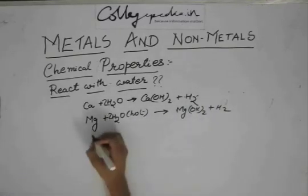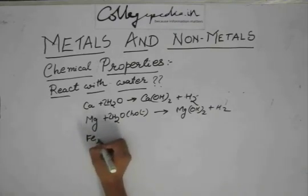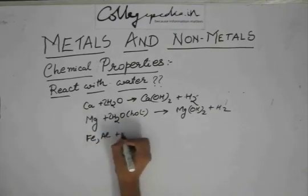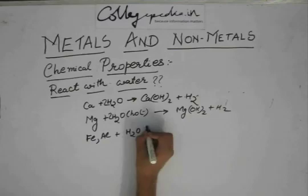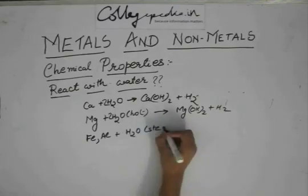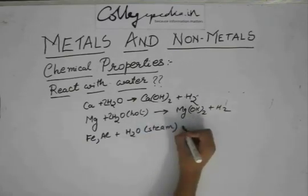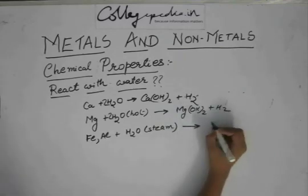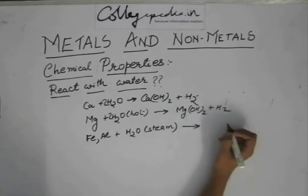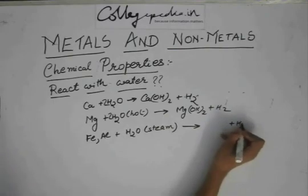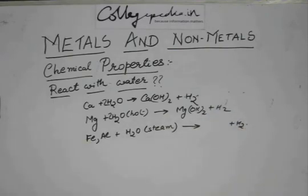Iron and aluminum will react with steam. They don't even react with hot water, they react with steam to give Fe(OH)3 or Al(OH)3 along with the evolution of H2. Depending upon what temperature of water these metals react with, you can guess what the metal actually is.